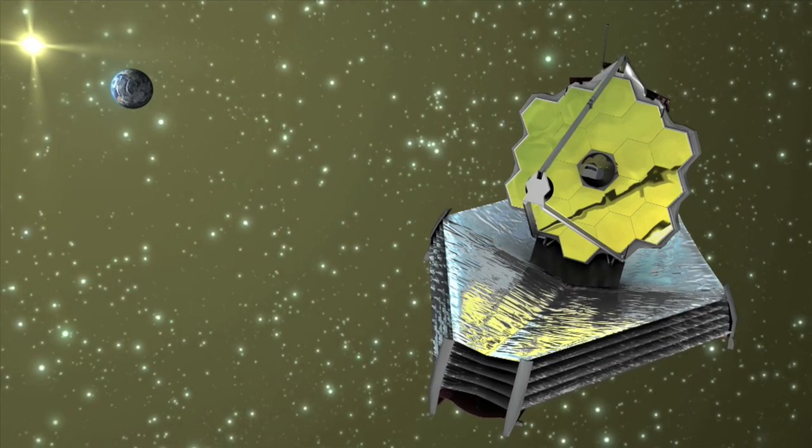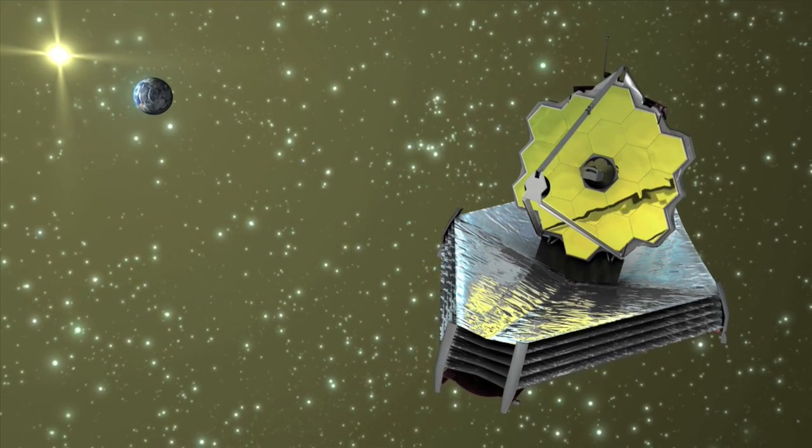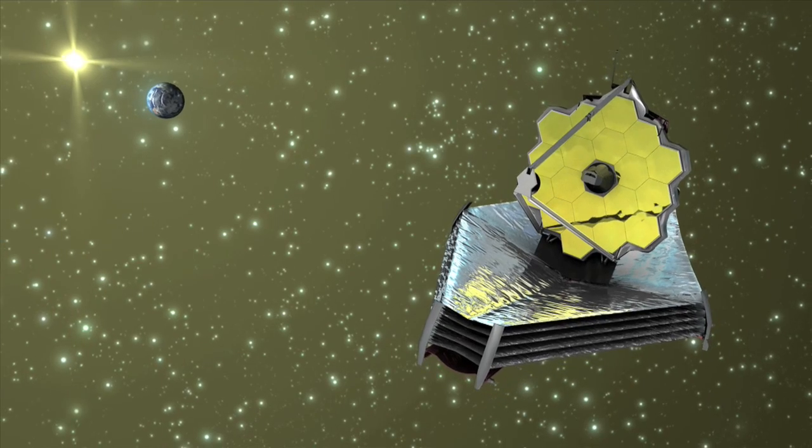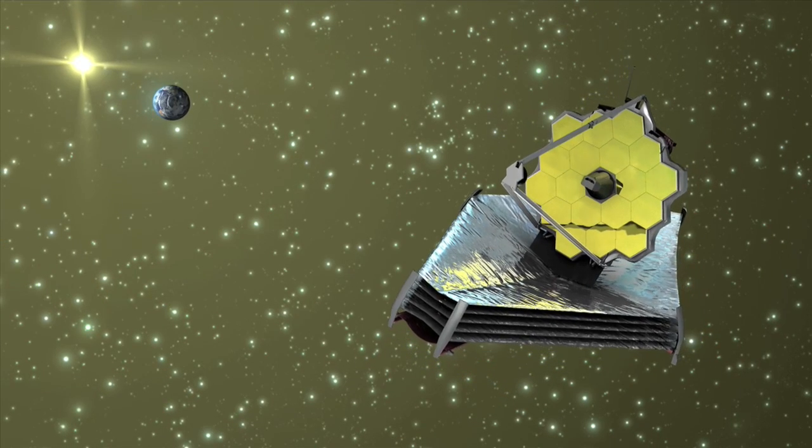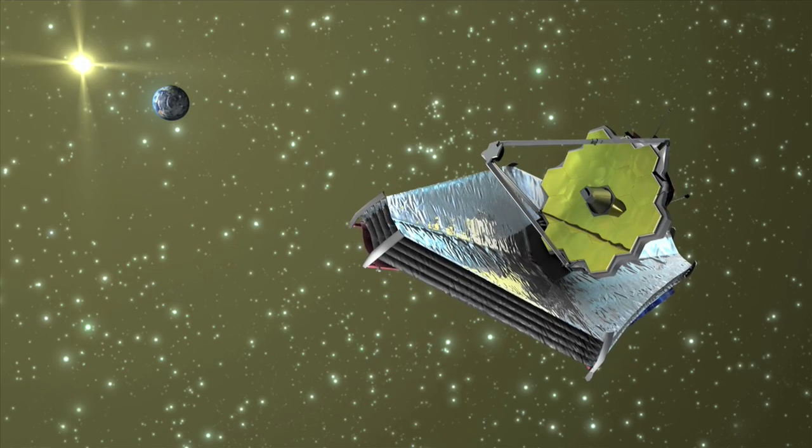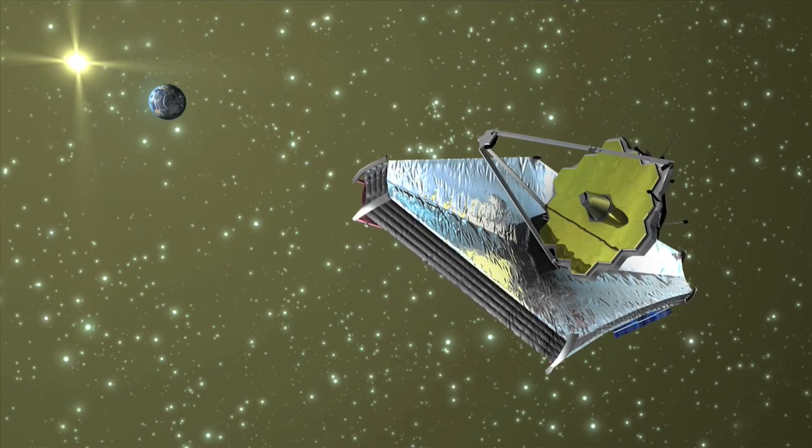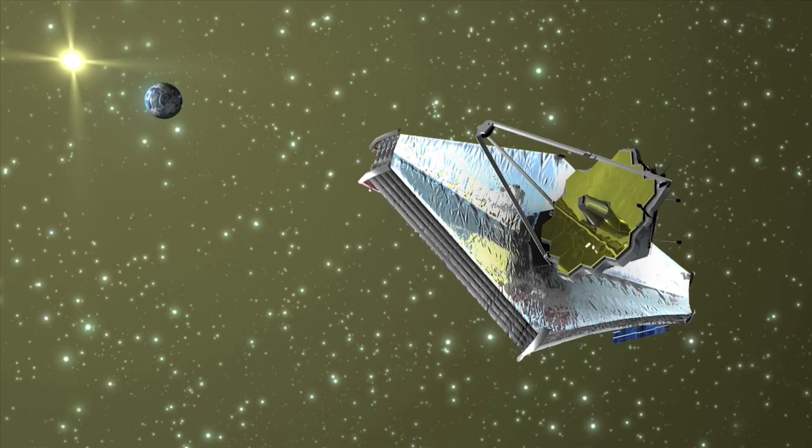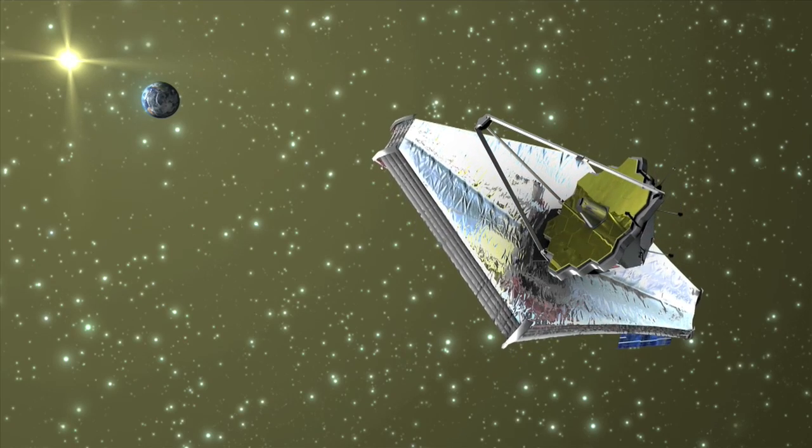Therefore, the James Webb Space Telescope's four scientific instruments will be protected from these objects by a tennis court-sized sunshield, as well as being placed at the second Lagrange point L2, an orbit where the Sun, Earth, and Moon will be in the same direction at all times.